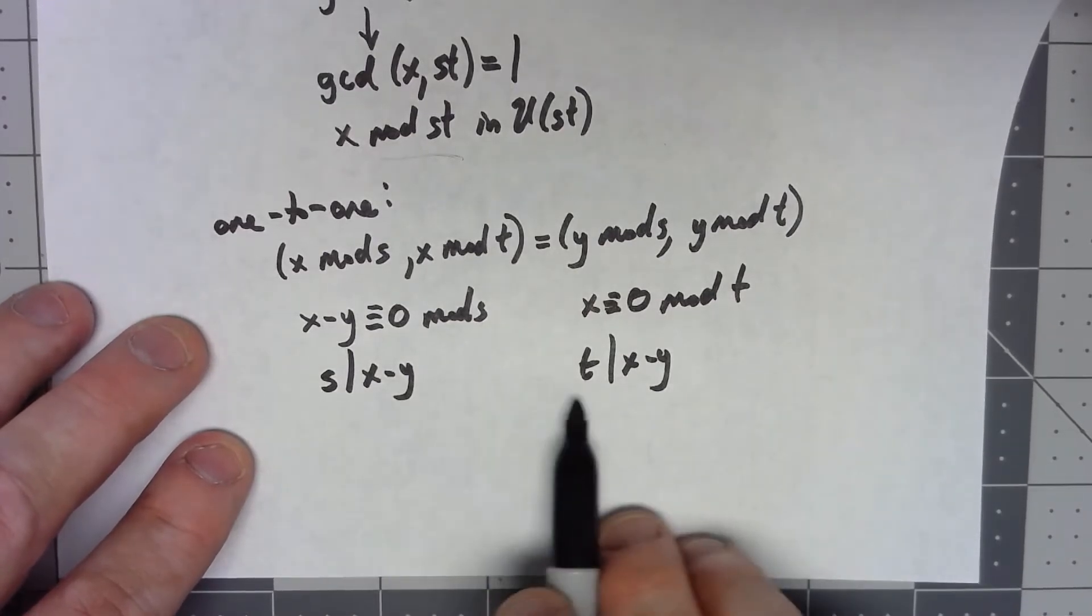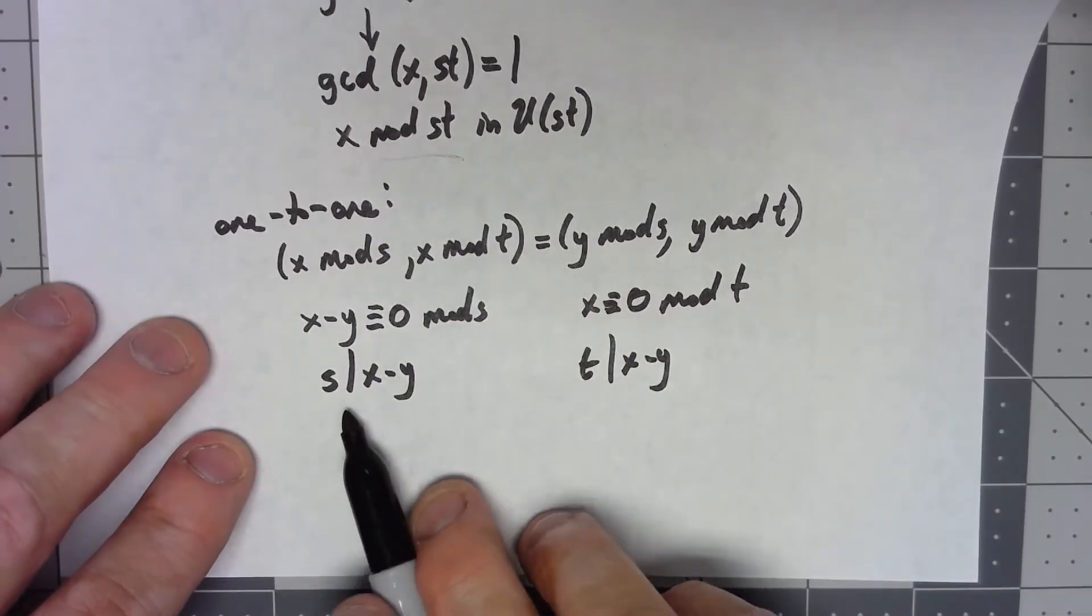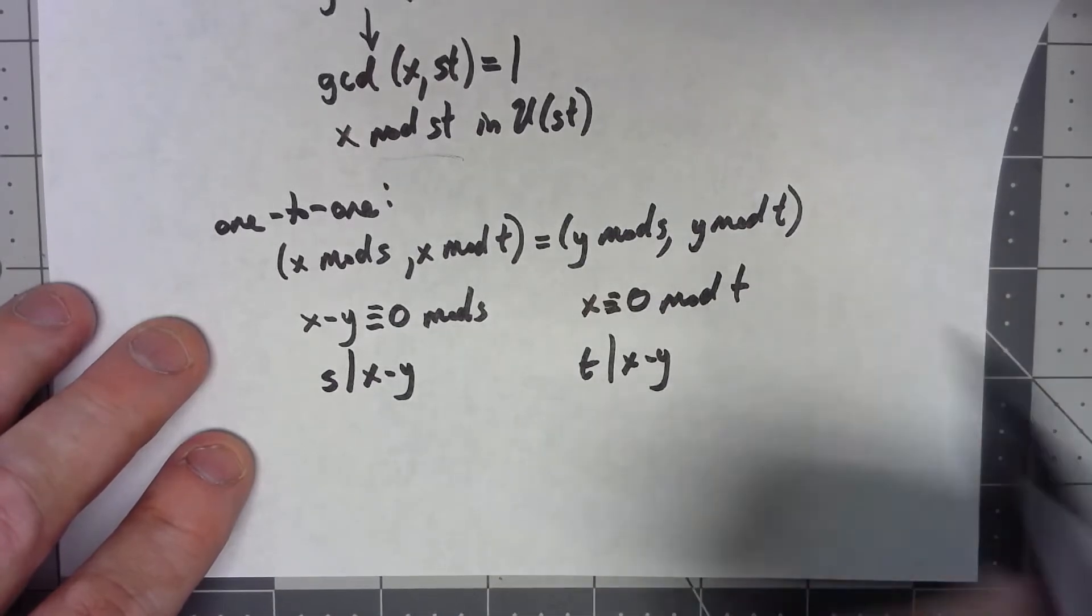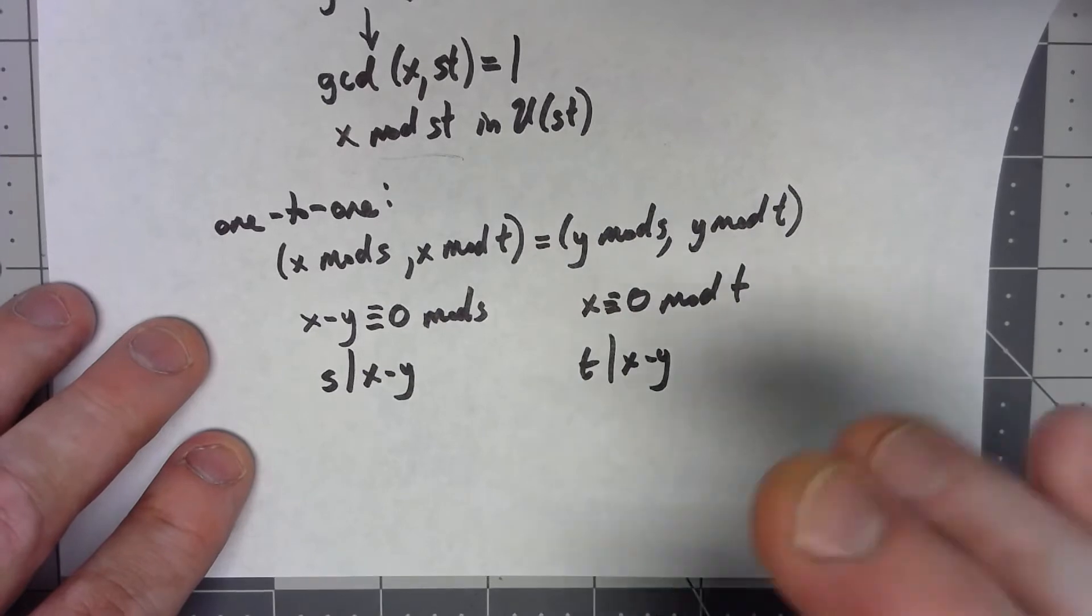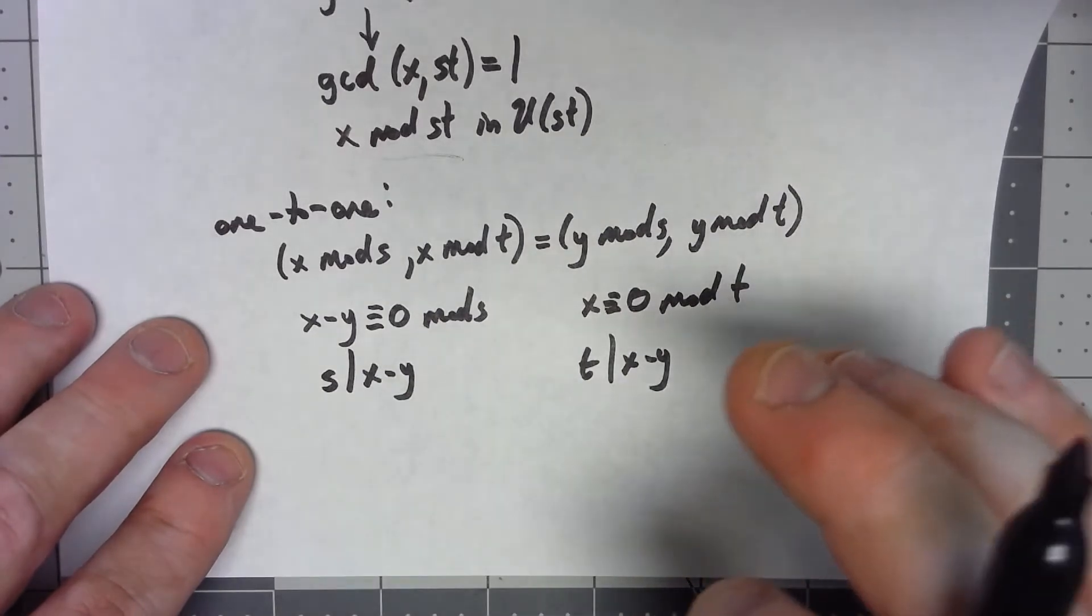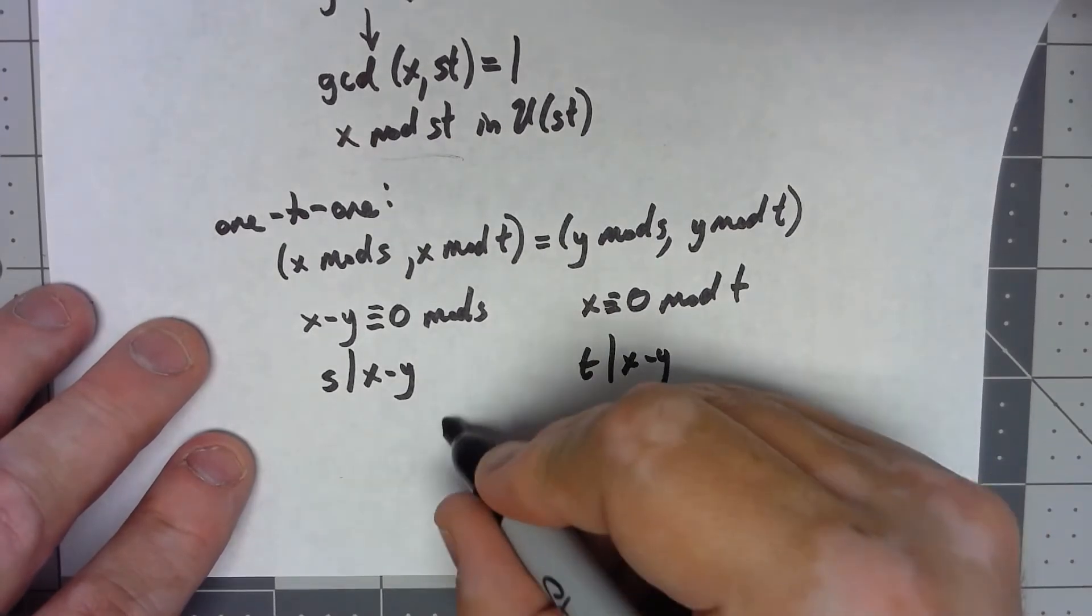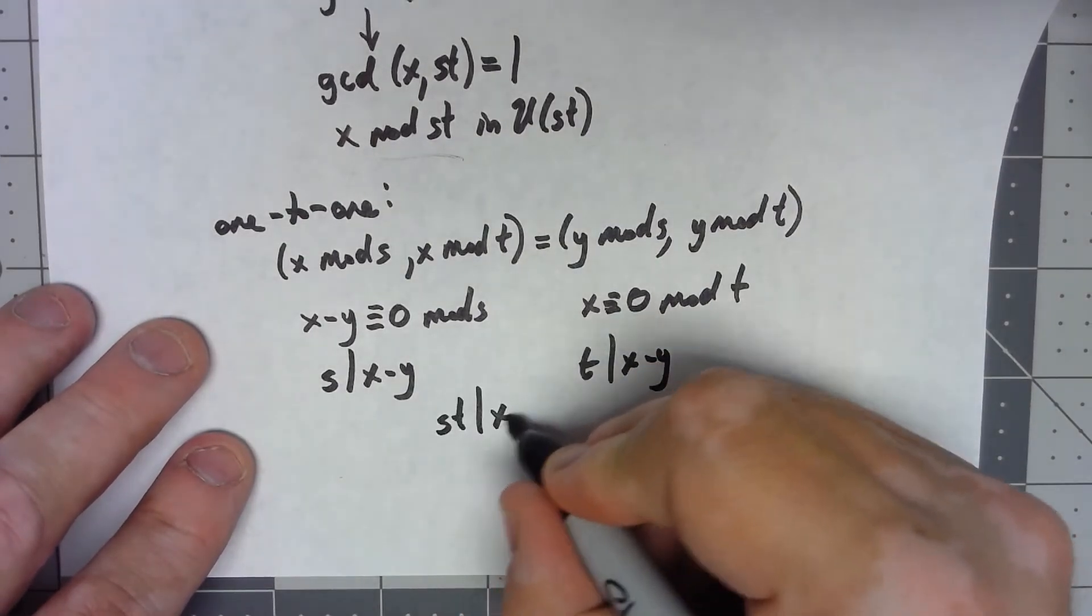But now, because we have s divides x minus y, and t divides x minus y, and also because again s and t are relatively prime, the only way that can happen is if st divides x minus y.